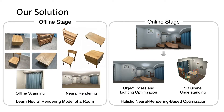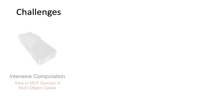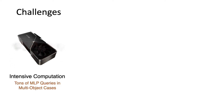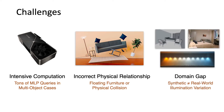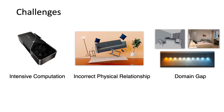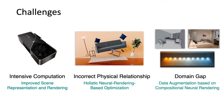While this framework is technically plausible, we find it suffers from several challenges, including intensive computation in multi-object neural rendering, physical violations such as floating furniture and physical collision, and the domain gap from synthetic to real-world scenes and illumination variations. We tackle all these challenges with improved scene representation and rendering, holistic neural rendering-based optimization, and brand-new data augmentation based on compositional neural rendering. Please refer to our paper for more details.